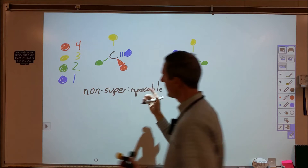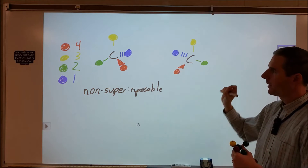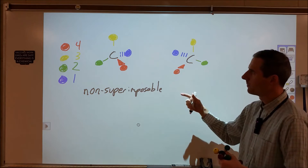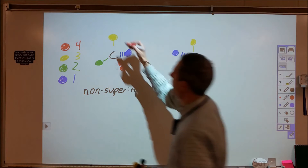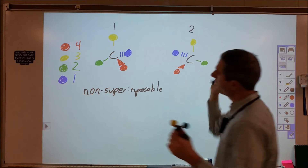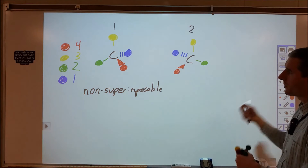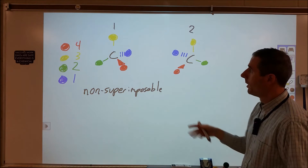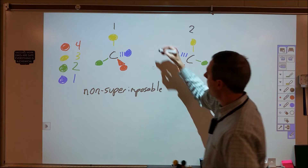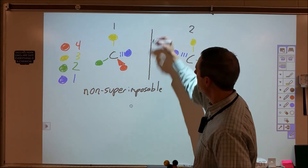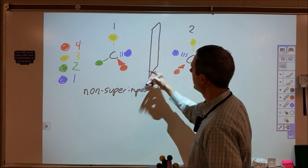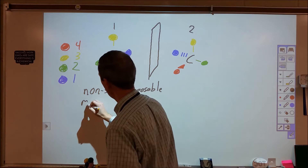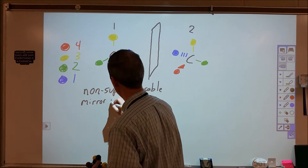Non-superimposable means I can't put one on top of the other in some rotation so that it is exactly the same as the other. So we have compound one and compound two — they're not the same, they're non-superimposable. If they were the same I should be able to pick one up and put it on top of the other. But there are a lot of similarities — if you put a mirror up between the two, one is the reflection of the other. So these are non-superimposable mirror images.